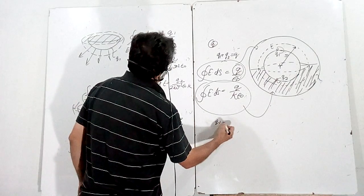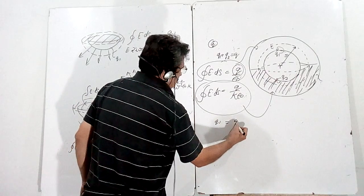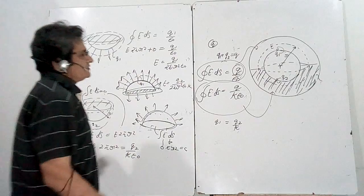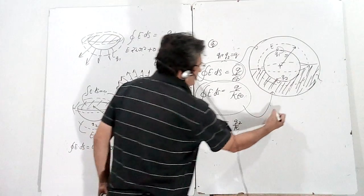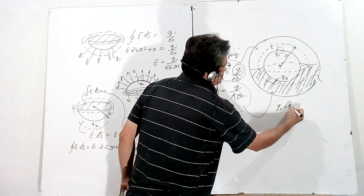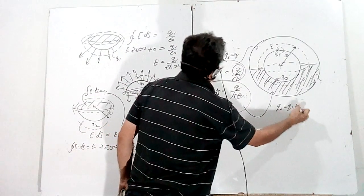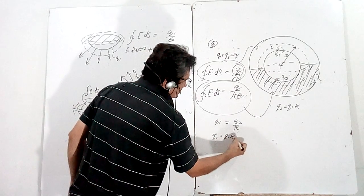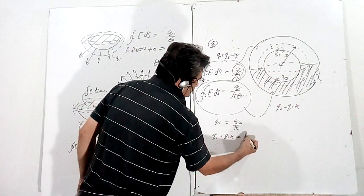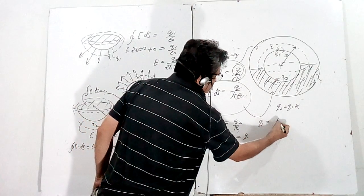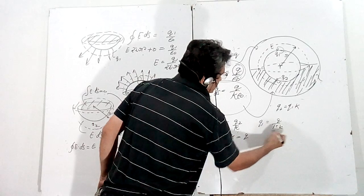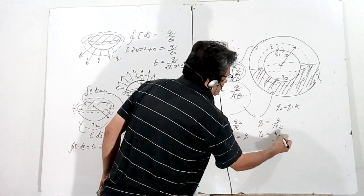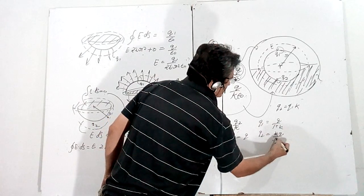Since both electric fields are equal, we get q1 = q2/k, which means q2 = kq1. Substituting into q1 + q2 = Q: q1 + kq1 = Q, so q1(1 + k) = Q, giving q1 = Q/(1 + k) and q2 = kQ/(1 + k).